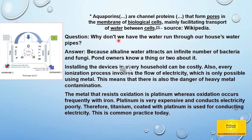Aquaporins are channel proteins that form pores in the membrane of biological cells, mainly facilitating transport of water between cells — Wikipedia. Why don't we have the water run through our house's water pipes? Because alkaline water attracts an infinite number of bacteria and fungi. Pond owners know a thing or two about it. Installing the devices in every household can be costly. Also, every ionization process involves the flow of electricity, which is only possible using metal. This means that there is also the danger of heavy metal contamination. The metal that resists oxidation is platinum, whereas oxidation occurs frequently with iron. Platinum is very expensive and conducts electricity poorly. Therefore, titanium coated with platinum is used for conducting electricity.